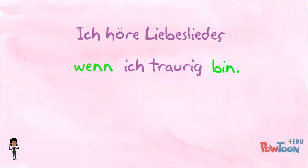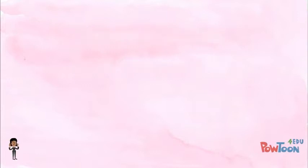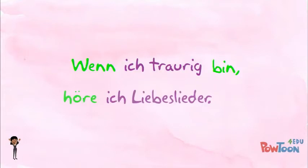Here's our first example again: Ich höre Liebeslieder wenn ich traurig bin — I listen to love songs when I'm sad. Let's see what happens when we reverse it and say 'when I'm sad, I listen to love songs.' We flip the clauses around. Look what happens: Wenn ich traurig bin, höre ich Liedeslieder. In the middle of the sentence we create a verb-comma-verb pattern. This is the rule when we begin a sentence with weil or wenn.